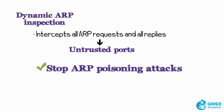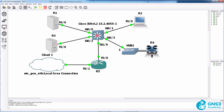Before talking about DHCP snooping in practice, you need to understand how DHCP works, which will be covered in the next video. After that, a demonstration will show how to set up a Cisco router in GNS3 to implement a man-in-the-middle attack using a DHCP server, followed by how to mitigate against man-in-the-middle attacks by configuring DHCP snooping on a switch.